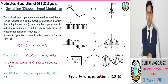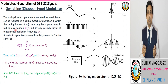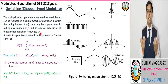Now we have the third DSB-SC modulator, which is known as the switching or chopper modulator. The multiplication operation is done by using a simple switching operation, where the multiplication of the modulating signal corresponds to any periodic signal whose fundamental frequency corresponds to the carrier signal ωC.